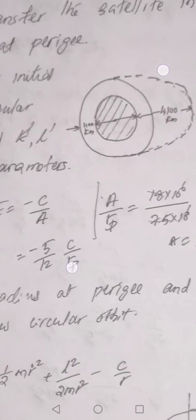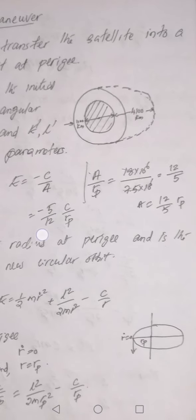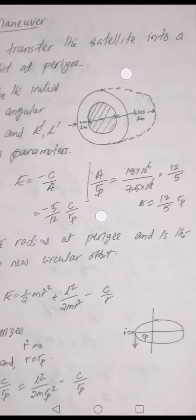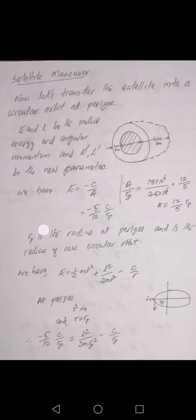Looking at the figure: this is the Earth. The dotted line represents the earlier elliptical orbit, which has a perigee and an apogee. We want to change the orbit to a circular one, so that the radius of the new orbit is the same as the perigee radius, Rp.